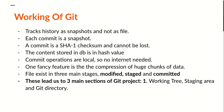Git tracks history as snapshots and not as individual files. It takes a snapshot of the entire tree structure, not just a single file with a timestamp like other version control systems. Each commit is a snapshot — when you're doing a commit, that is a snapshot.